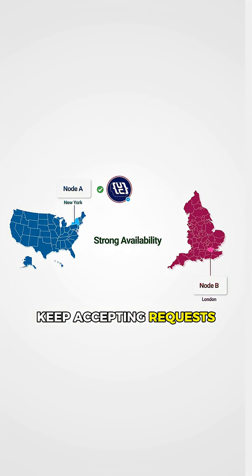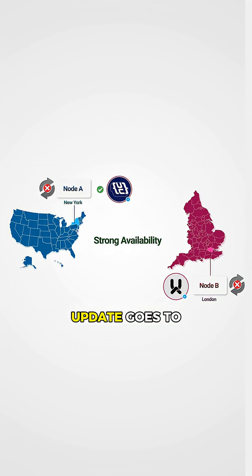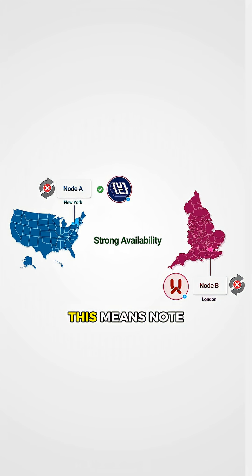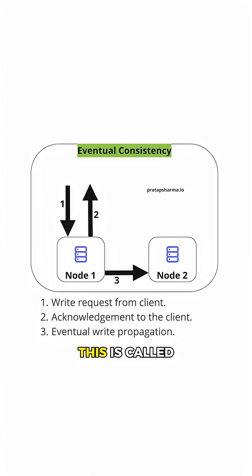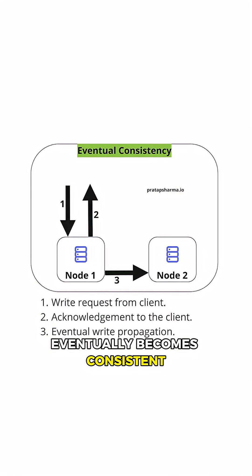If you prioritize availability, both nodes will keep accepting requests even during the partition. Your profile picture update goes to node A, and node A says: got it, update complete — even though it can't sync with node B yet. This means node A has your new profile picture, but node B still has the old one. Your friend checking from London might see your old profile picture while you see the new one from New York. The system is available and responding to requests, but it's temporarily inconsistent. Eventually, when the network partition heals, the nodes sync up and everyone sees the same data. This is called eventual consistency, because the data eventually becomes consistent across all nodes.